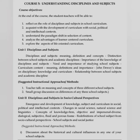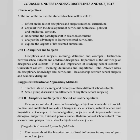Course 5 is Understanding Discipline and Subject. Course objective: at the end of the course, the student and teacher will be able to reflect on the role of discipline and subject in the school curriculum; acquaint with the development of curriculum in social, political, and intellectual context; understand the paradigm shift in selection of content; analyze the advantages of learner-centered curriculum; and explore the aspects of life-oriented curriculum.